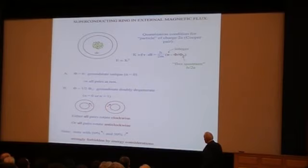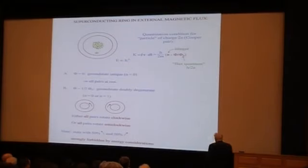So at least at the classical level, either all the pairs rotate anticlockwise, or they all rotate clockwise. You might say, well, couldn't you have half the pairs rotate clockwise and the other half rotate anticlockwise? And the answer is no, you can't. It turns out that that state is very strongly forbidden by energetic considerations.